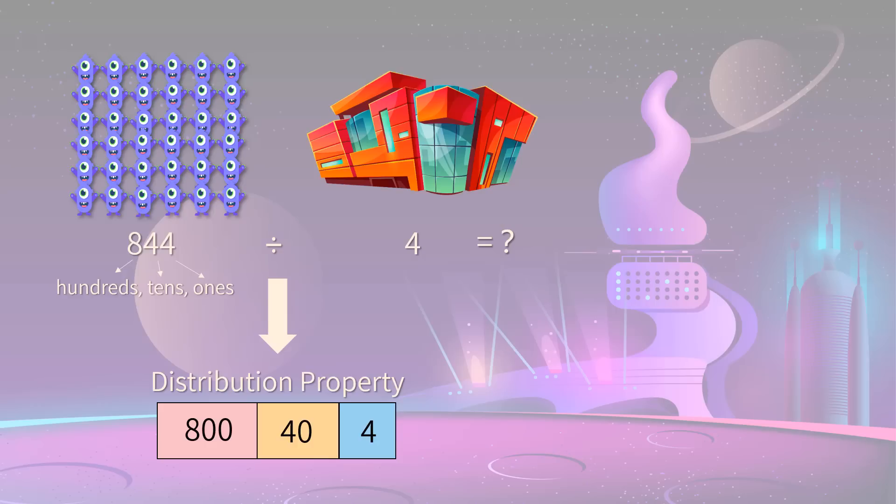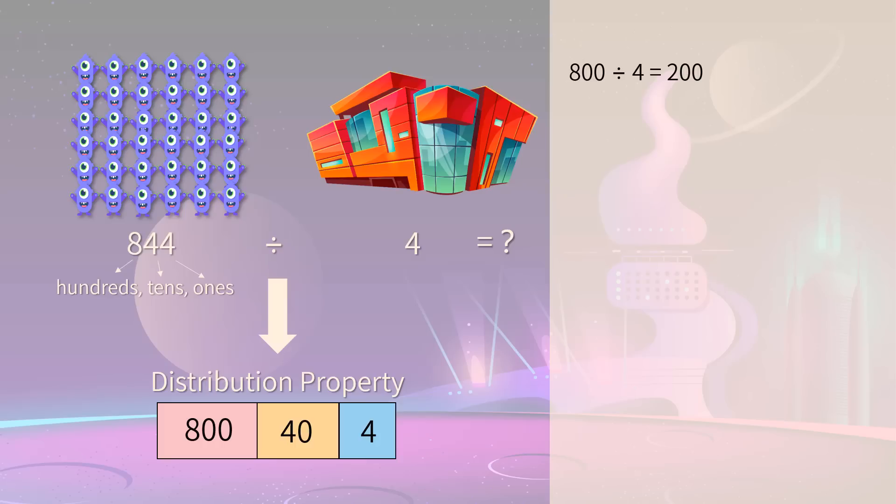By using this shape model, we just need to find the partial quotient of each block divided by 4. And they are 200, 10, and 1 for the three parts respectively.